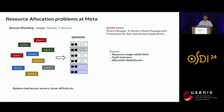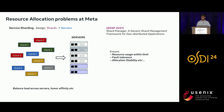Moving up the stack further, we have the sharding problem, where services have a bunch of shards that need to be assigned to a set of geographically distributed servers. We want to make sure that resource usage on each server is within the limit, ensure fault tolerance and stability, balance load across servers, and honor affinity of shards towards specific servers.